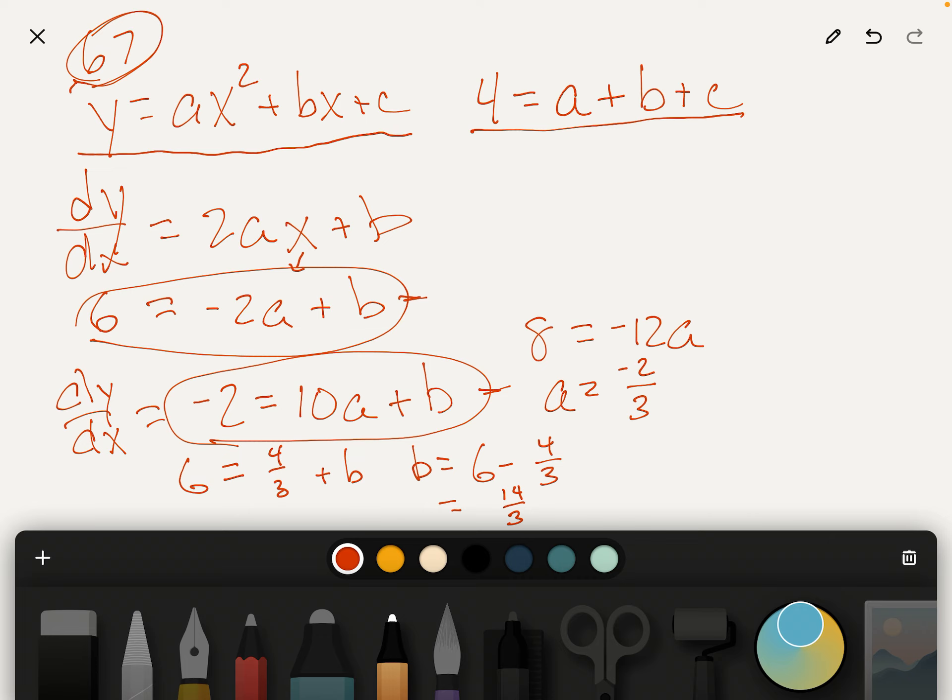So we've got A and B. Let's find C. So 4 equals negative 2 thirds plus 14 thirds plus C. In other words, 4 equals 12 thirds plus C. Ah, C equals 0. So that's easy. So the parabola that they want is Y equals negative 2 thirds X squared plus 14 thirds X. And C is 0. So there it is. That'll do it.